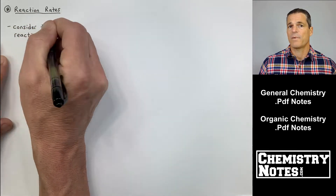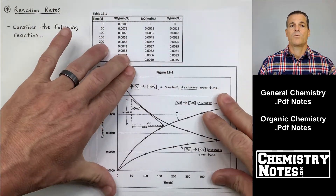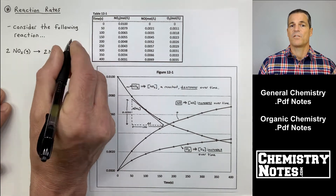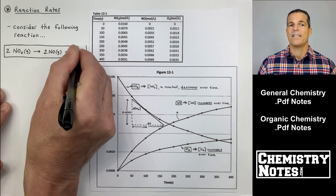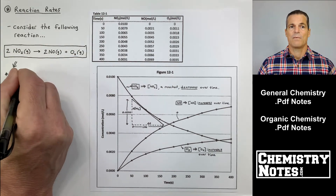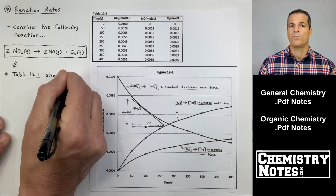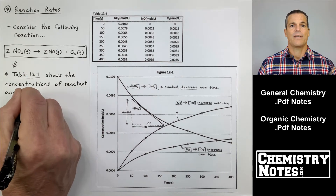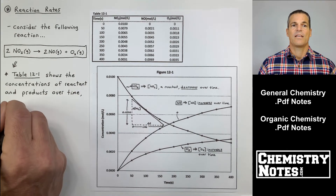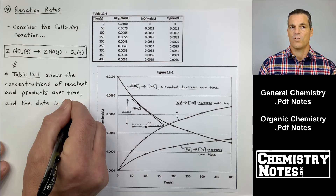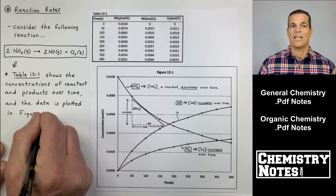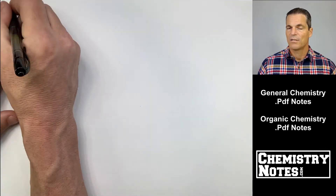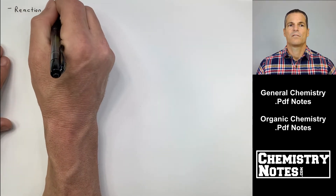Now let's talk about reaction rates. The table and graph — Table 12-1 and Figure 12-1 — are related. We have reactant NO₂, and as you can see it's decreasing over time, while the two products NO and O₂ are increasing over time. Notice that O₂ is only increasing half as fast, because it has a coefficient of one in the balanced equation, whereas NO₂ and NO both have coefficients of two.